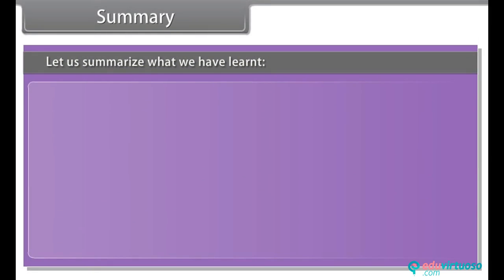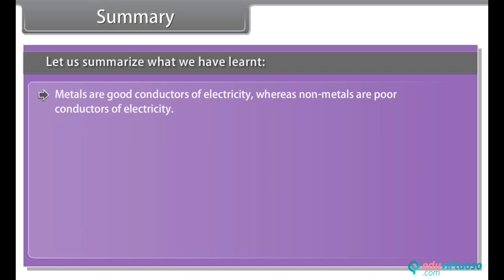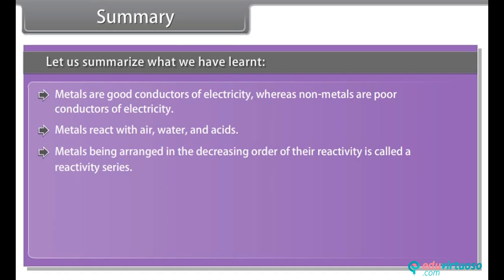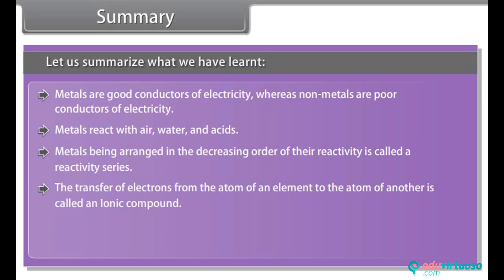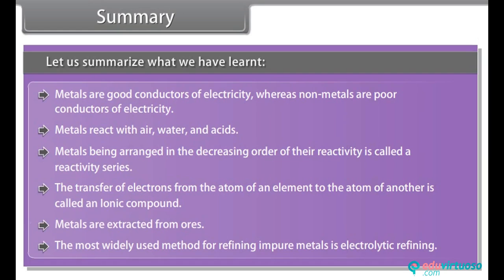Summary. Let us summarize what we have learnt. Metals are good conductors of electricity, whereas non-metals are poor conductors of electricity. Metals react with air, water and acids. Metals being arranged in the decreasing order of their reactivity is called a reactivity series. The transfer of electrons from the atom of an element to the atom of another is called an ionic compound. Metals are extracted from ores. The most widely used method for refining impure metals is called electrolytic refining.